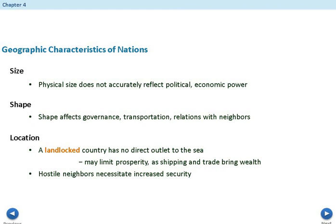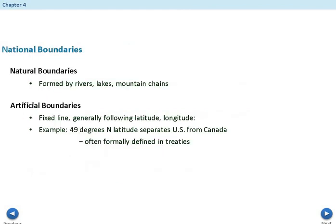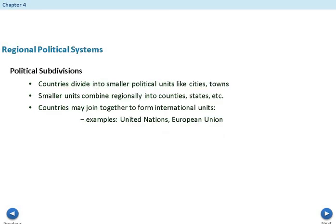Being landlocked can be problematic — if you have a negative relationship with a neighboring country, you may not be able to trade effectively. Hostile neighbors increase the need for security, causing further issues. You also see natural boundaries, formed by rivers, lakes, and mountain chains. There are also artificial boundaries — for example, the 49th degree line that separates the United States from Canada is a fixed line you wouldn't actually see if you drove there. A natural boundary, like the Missouri River east of Nebraska, is a physical feature you can actually see.